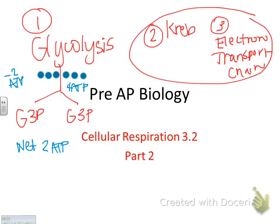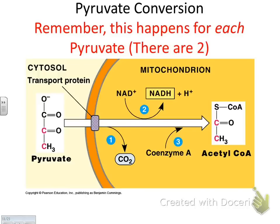Today's video is specifically about the Krebs cycle. If oxygen is present within eukaryotic cells — so if there's oxygen, it's aerobic — then the cell is going to do the Krebs cycle. The pyruvate or G3P from glycolysis, which happened on the outside, has to go inside the mitochondria and become acetyl-CoA.